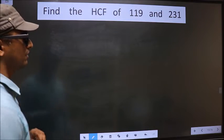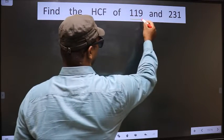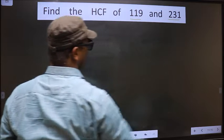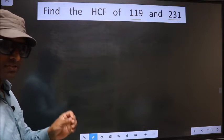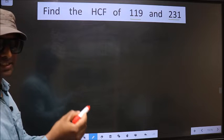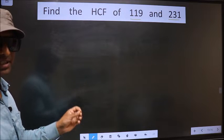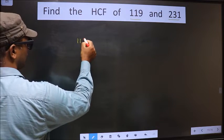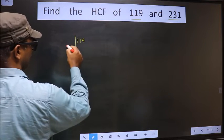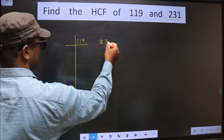Find the HCF of 119 and 231. To find the HCF, first we should do the prime factorization of each number separately. That is, 119 and 231.